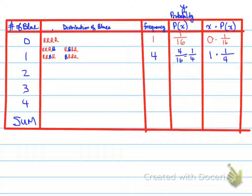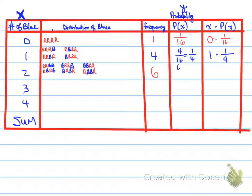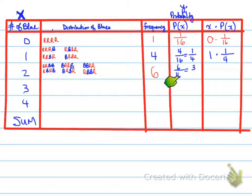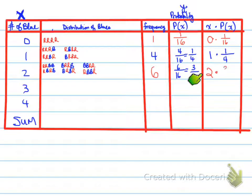For 2 blues, listing all combinations such as blue/blue/red/red, red/red/blue/blue, red/blue/red/blue, and so on, there are 6 occurrences out of 16, which reduces to 3/8. So x times P(x) = 2 × 3/8.